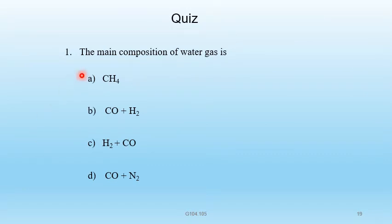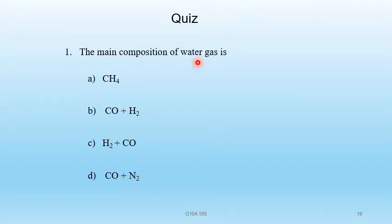Question 5 — The main composition of water gas is: A) CH4, B) CO + H2, C) H2 + CO, D) CO + N2. The main composition of water gas is carbon monoxide plus hydrogen. B is the correct answer.